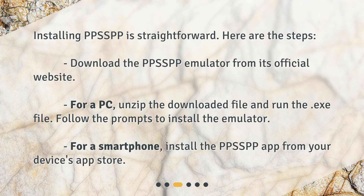Installing PPSSPP is straightforward. Download the PPSSPP emulator from its official website. For a PC, unzip the downloaded file and run the .exe file, then follow the prompts to install the emulator. For a smartphone, install the PPSSPP app from your device's app store.